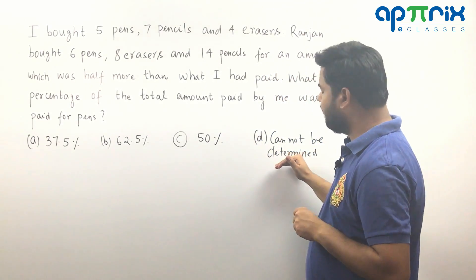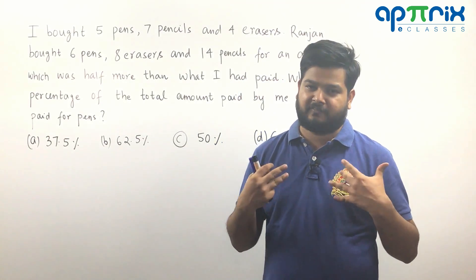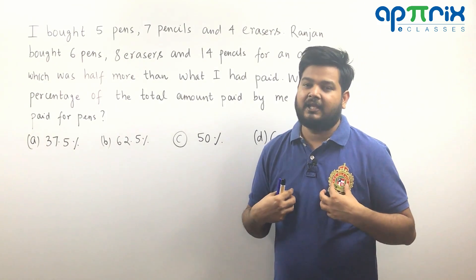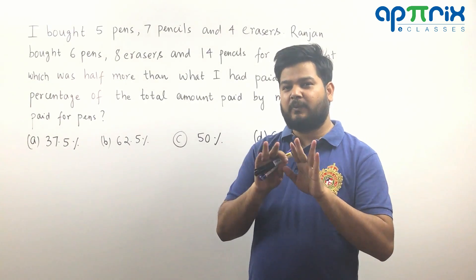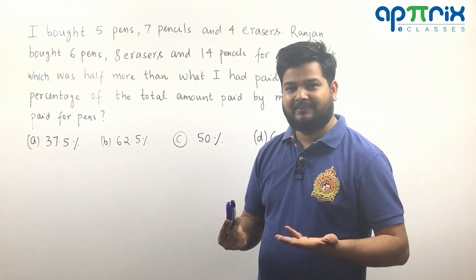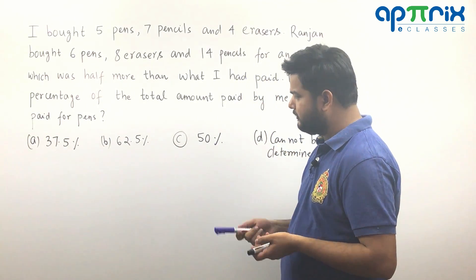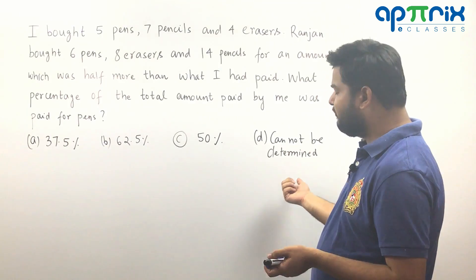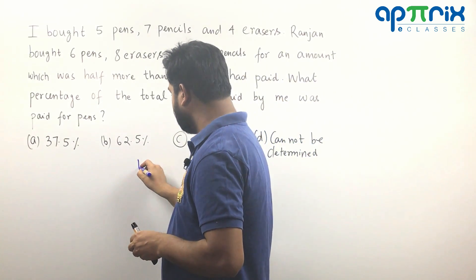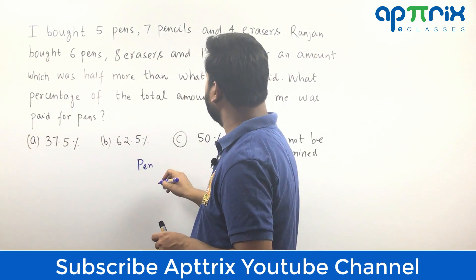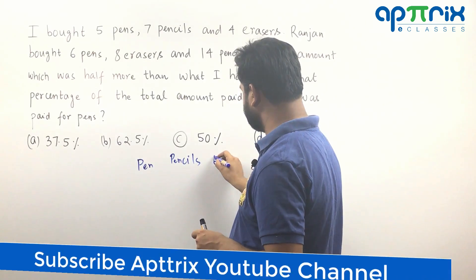Before marking cannot be determined, even if there are three variables and there are two equations, it is possible to solve it because sometimes by only one operation two variables are actually rejected or cancelled out. Let's try to understand this first, then only we will decide if cannot be determined will be the answer or not. So I'm writing here pen, this is pen and then pencils and then I will be writing here erasers.